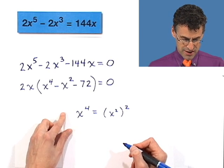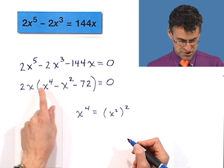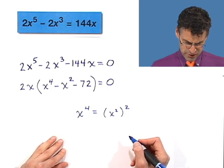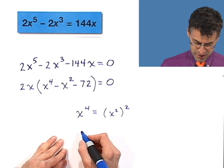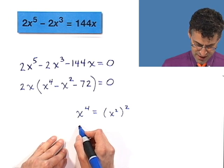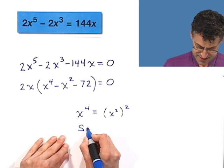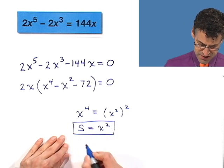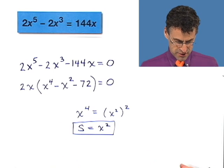So really, what I could do is notice that this is going to be x squared squared and this is x squared. You might even want to put a little replacement in there. Maybe we can call it s for squared. So let's let s equal x squared. If you don't like this, by the way, don't do it. But here's an easy way just to kind of make it clear what's going on here.